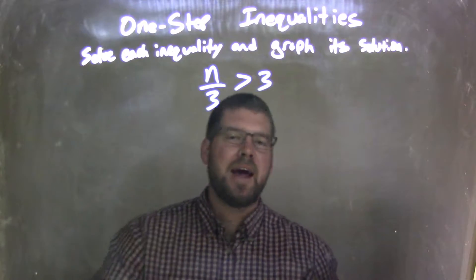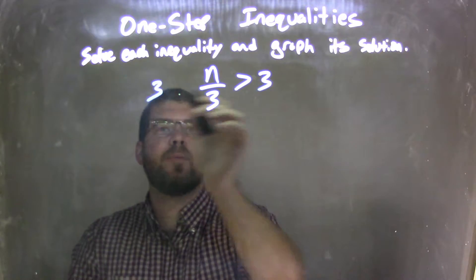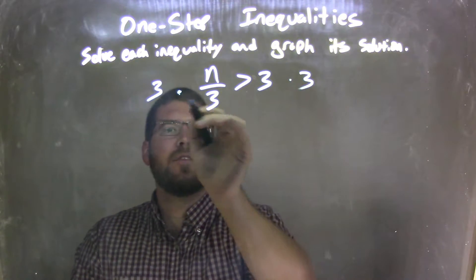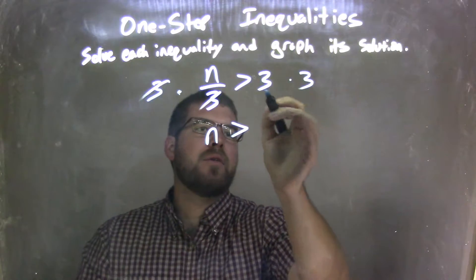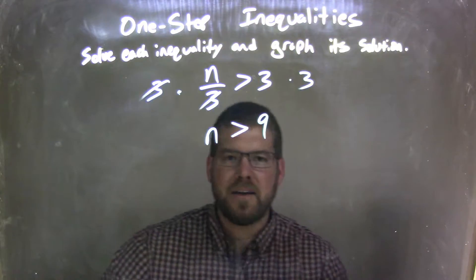My first step is to get n by itself. So I multiply both sides by a positive 3. What that does is it eliminates the 3 on the left, giving me n by itself. n is greater than 3 times 3, which is 9. So we have n is greater than 9.